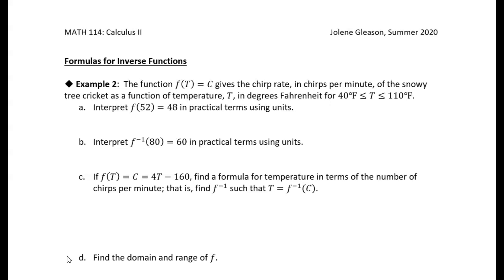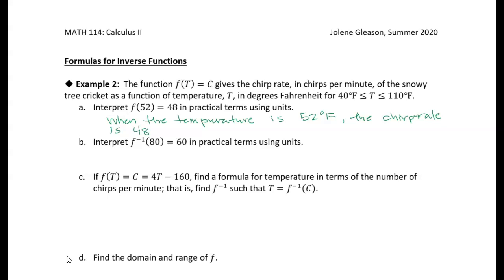So the output of the function is the chirp rate, and the input is the temperature. What it's saying is: when the temperature is 52 degrees Fahrenheit — because t is our input to the function — the chirp rate is 48, because chirp rate is our output. And the units are chirps per minute.